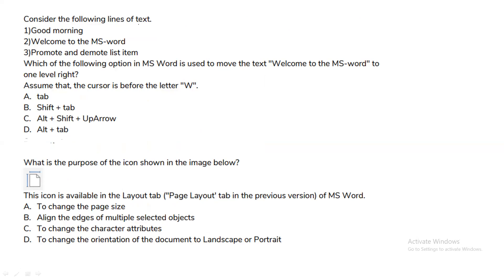Consider the following line of text: 'Good morning, welcome to MS Word.' To promote and demote list items — specifically, to move the text 'Welcome to MS Word' one level to the right — you will use Shift + Tab. Option B will be the correct answer for moving the text one level right.